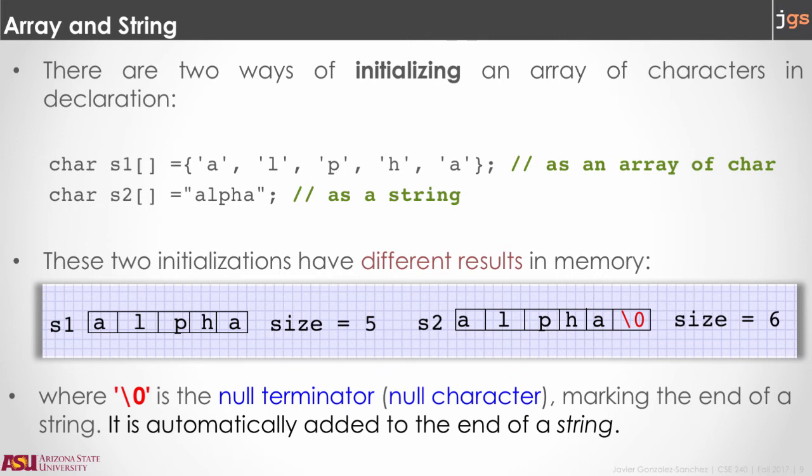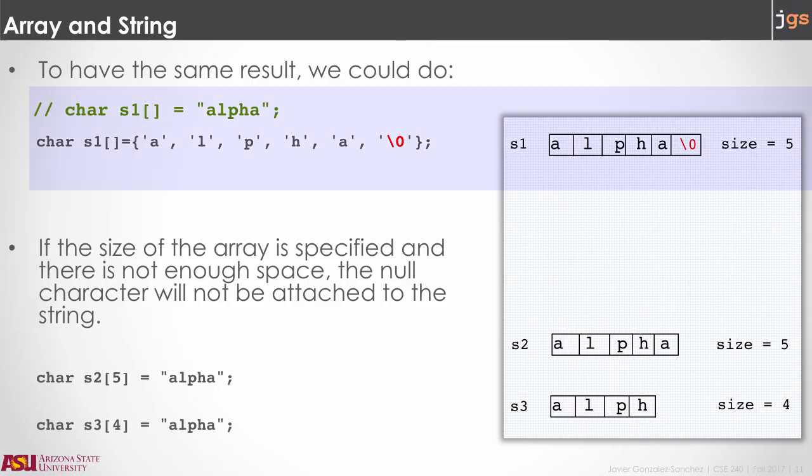In the example, s1 has a size 5 because it has five elements as listed in the initialization. However, s2 has a size 6 because s2 has the same five elements, but also the null character in the last position of the array. These two lines here are equivalent. You can initialize the array with a string, or also you can put values in the array and include a last element with the null character.